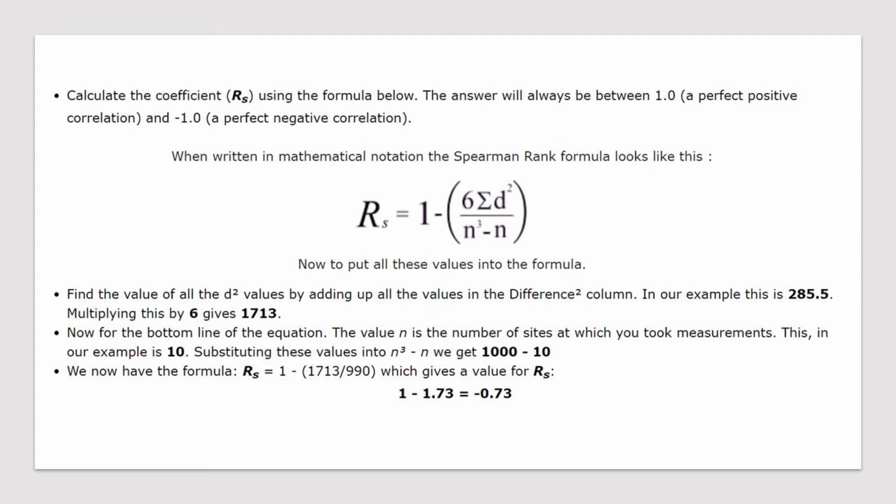When we plug everything into the formula — RS equals 1 minus 6 times the sum of d squared over n cubed minus n — we can see that in this situation the Spearman's rank is negative 0.73. If this number is positive, it's going to be a positive correlation; if it's negative, it's going to be a negative correlation.